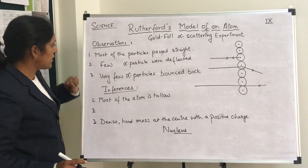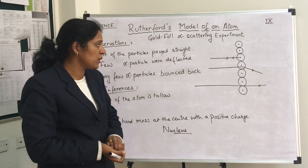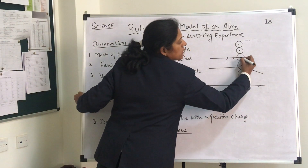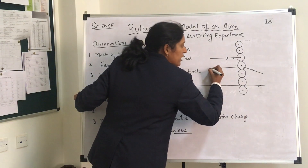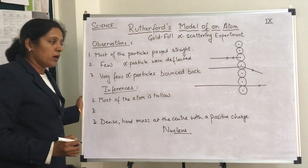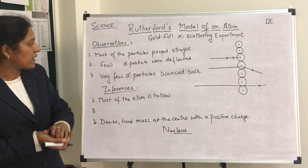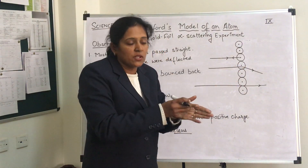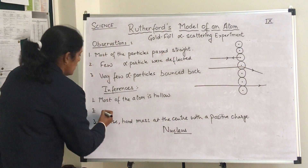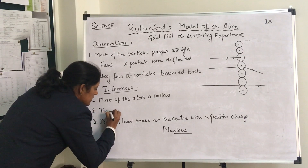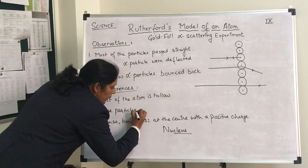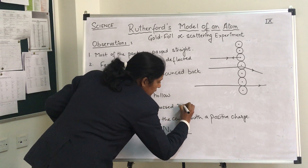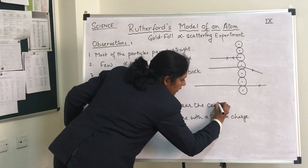Regarding the second observation: a few alpha particles were deflected from their position. This was because those particles which directly hit the central nucleus bounced back, but those particles which passed near the nucleus got deflected because the nucleus is positively charged and alpha particles are also positively charged — positive repelling positive caused the deflection. This was due to those particles which passed near the central core, which is the nucleus.